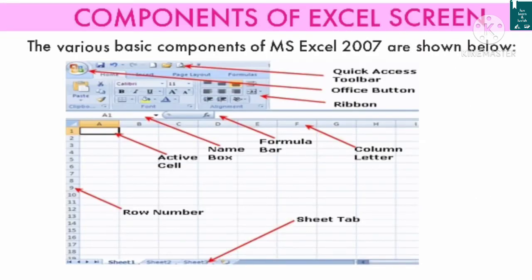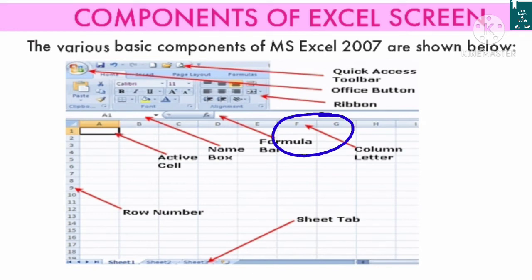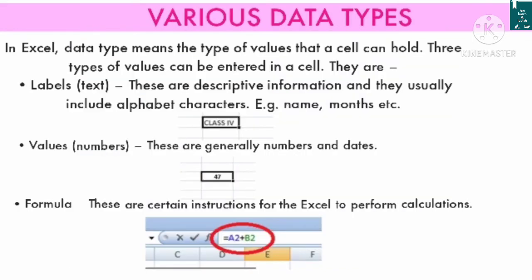Components of the Excel screen: the various basic components of MS Excel 2007 are the Office Button, Quick Access Toolbar, Ribbon, Name Box, Formula Bar, Active Cell, Column Letter, Row Number, and Sheet Tab.